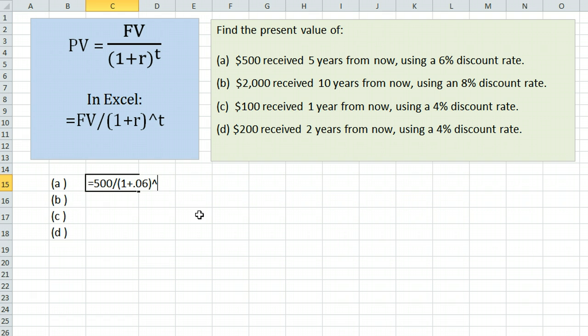which means raised to the, and t, which is 5, because it is 5 years from now. When we hit enter, it gives us our answer. $500 received five years from now will have a present value of $373.63.